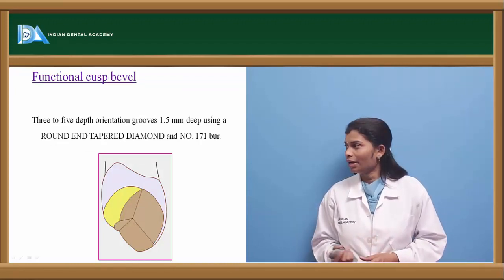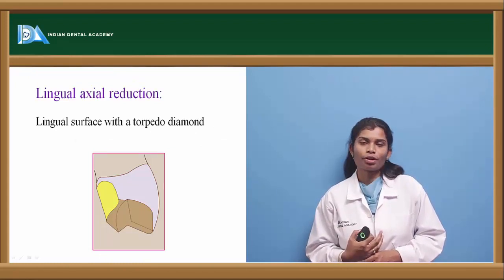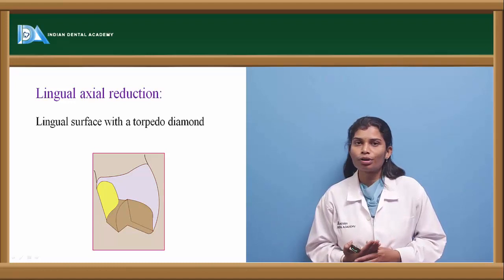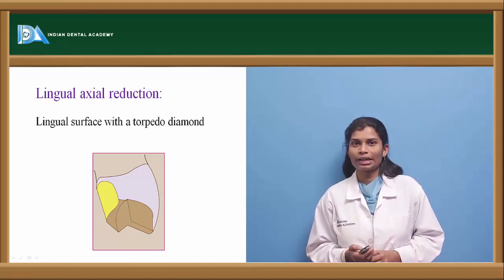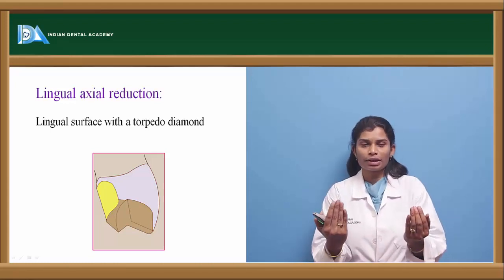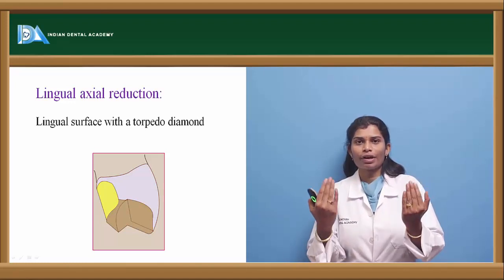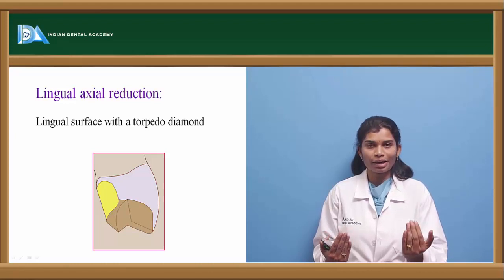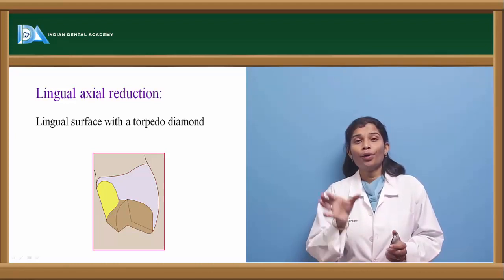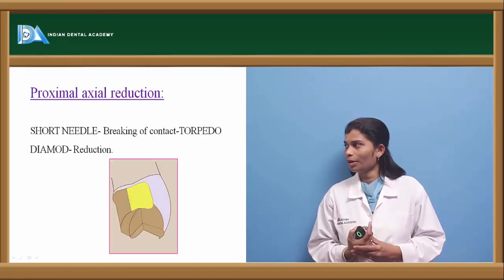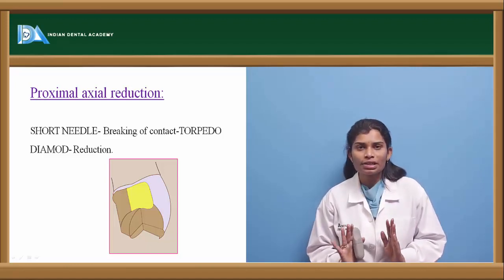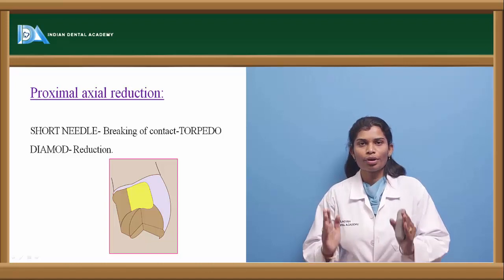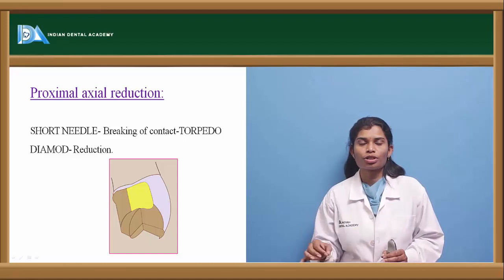After the functional cusp bevel, proceed with lingual reduction using a torpedo diamond (chamfer bur), reducing 1 to 1.5 mm depending on restoration type. Stop the lingual preparation just lingual to the contact — never break the contact to maintain aesthetics. At the point where you stop on the lingual surface, place a retentive groove on both surfaces, parallel to the incline of the facial surface. This seating groove ensures the proper path of placement.